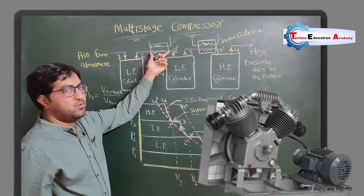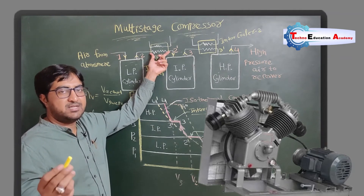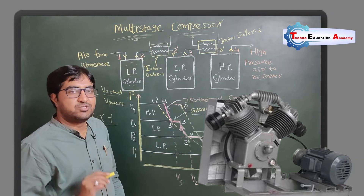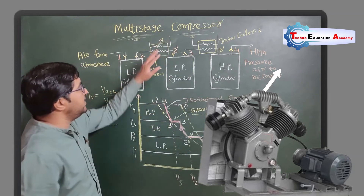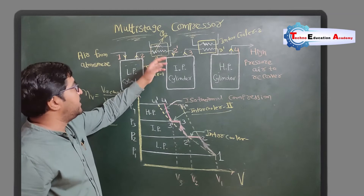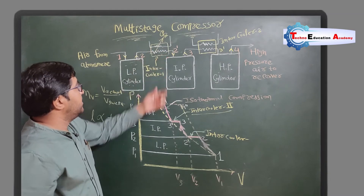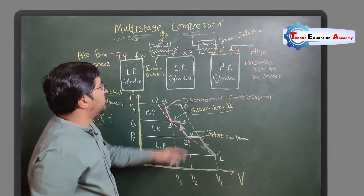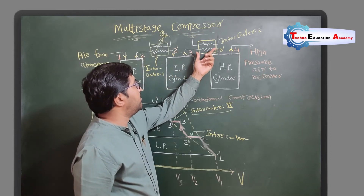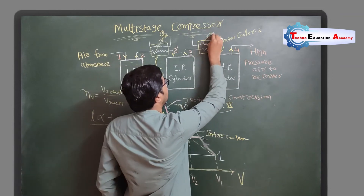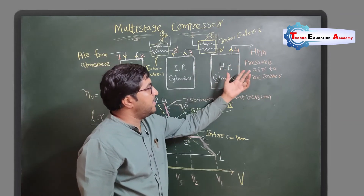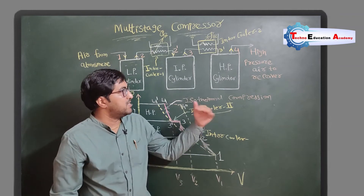After compression in the low pressure cylinder, the air passes through the intercooler — a type of heat exchanger. The problem is that with an increase in pressure, temperature also increases, so the intercooler rejects heat to the surroundings. Theoretically, pressure remains constant and temperature drops — this process is represented by 2 to 2'. Then it is compressed again in the intermediate pressure cylinder, passes through a second intercooler for constant pressure heat rejection, and finally is compressed in the high pressure cylinder and delivered to the delivery tank.